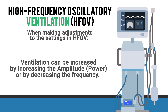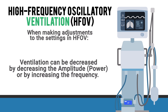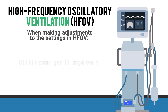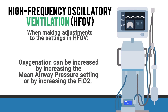Ventilation can be increased by increasing the power or amplitude setting, or by decreasing the frequency. Oxygenation can be increased by increasing the mean airway pressure setting or by increasing the FiO2, and vice versa if you want to decrease oxygenation.